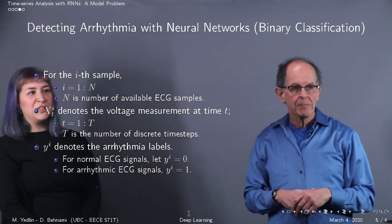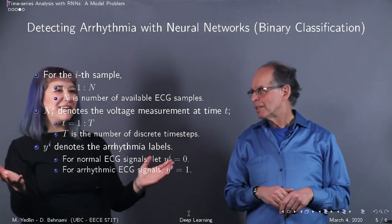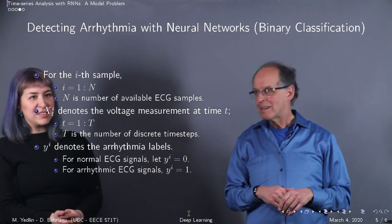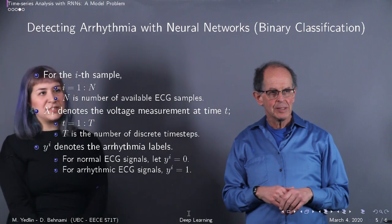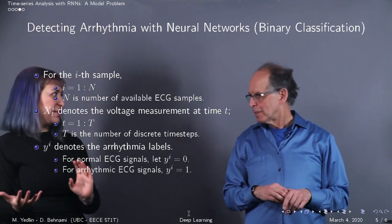So imagine the two classes you want to predict is arrhythmia or not, no arrhythmia. The inputs in this case, which we'll denote with x for the i-th sample, which is your i-th patient or the i-th ECG that you gathered.